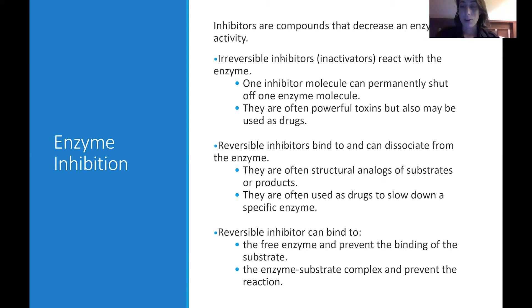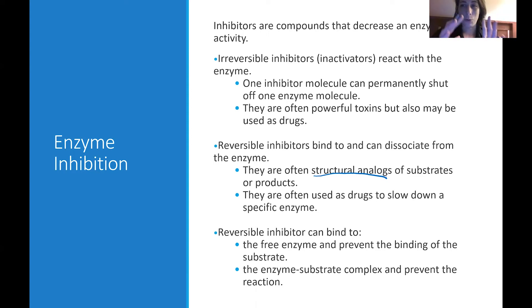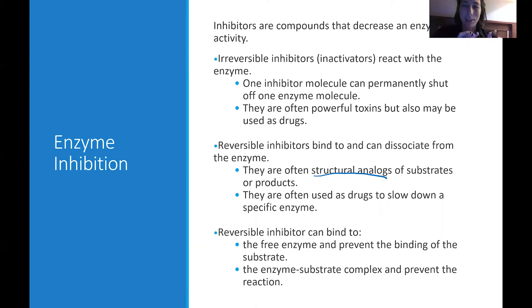There are also reversible inhibitors, which can bind to an enzyme but also unbind or dissociate from an enzyme. Usually, if you have some reversibility, the compound is a structural analog — it looks like the normal substrate or one of the products. If you can kind of bind and come in and out as an inhibitor, you have to look like one of the things that normally binds to that enzyme. These are usually used as drugs, because reversibility is good — we don't want something to completely shut down an enzyme, but maybe just slow down its ability to work.